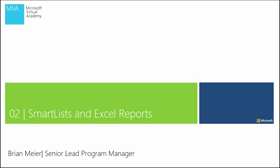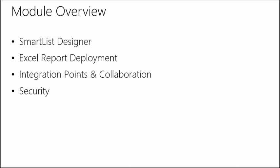Welcome to Module 2, Smart Lists and Excel Reports from Microsoft Dynamics GP 2013. In this module, we'll cover Smart List Designer, how to use it, how to modify and create Smart Lists. We'll cover Excel report deployment, both from an on-premise and an Office 365 environment. We'll cover the integration points and how you can collaborate with others using your Excel reports. And finally, we'll wrap up with the security aspect, covering Windows Authenticated Security and how to set up security access to view Excel reports.